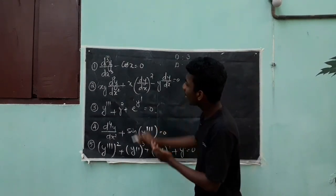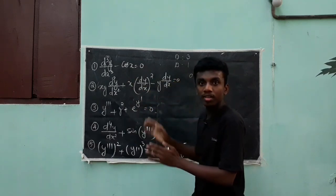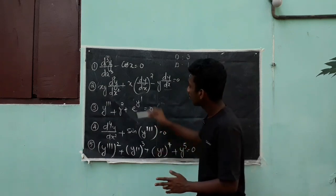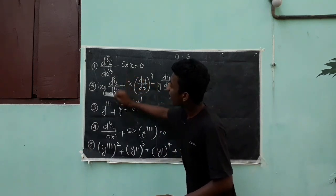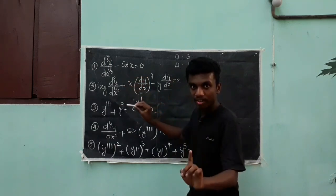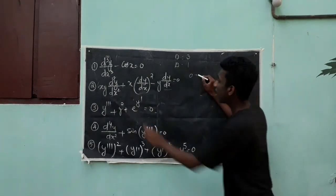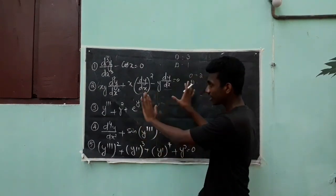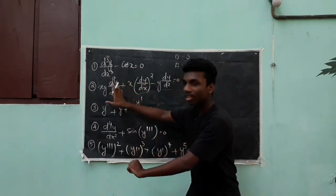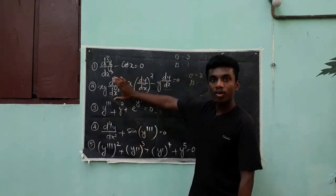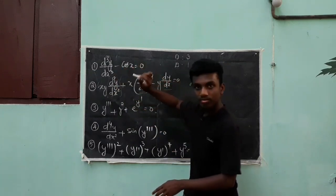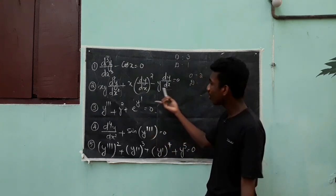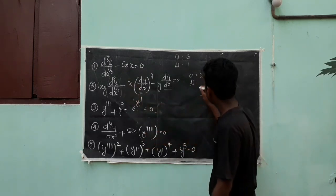Now for the degree of xy·(d²y/dx²) + x·(dy/dx)² - y·(dy/dx) = 0. The highest order term is d²y/dx². The power of d²y/dx² here is 1. It is not inside any transcendental function like e^(y') or sin(y'). Therefore, the degree is 1.